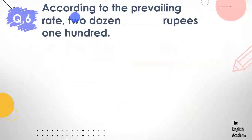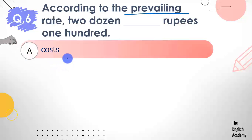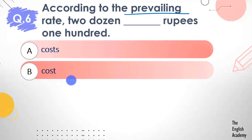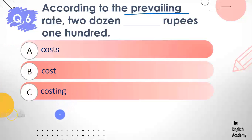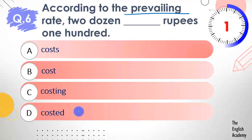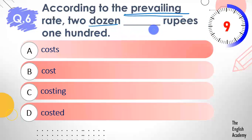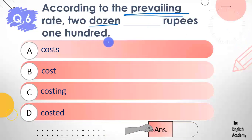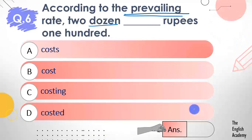Question number 6: According to the prevailing rate, two dozen ___ rupees 100. Options: A) costs, B) cost, C) costing, D) costed. According to the prevailing rate — meaning the current rate — what does two dozen cost? The answer is option B — cost. Two dozen cost rupees 100.